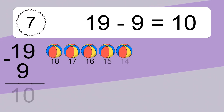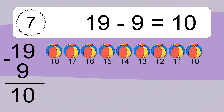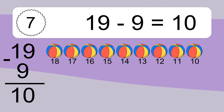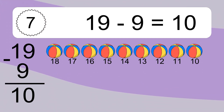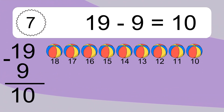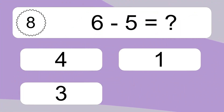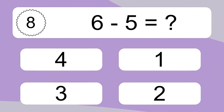19 minus 9 equals what? 19 minus 9 equals 10. Let's count it: 18, 17, 16, 15, 14, 13, 12, 11, 10.